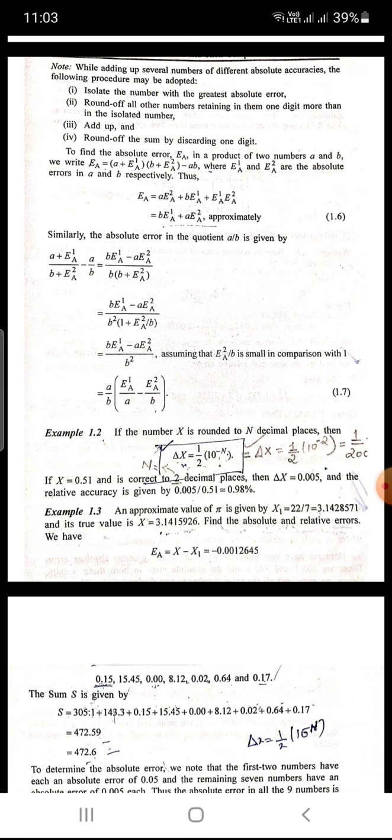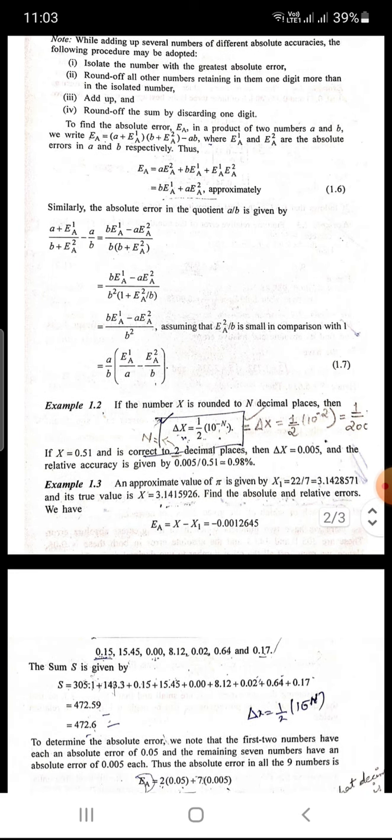Which equals b e1a minus a e2a upon b plus e2a, which equals b e1a minus a e2a upon b squared times (1 plus e2a upon b). So this will be equal to (b e1a minus a e2a) upon b squared times (1 plus e2a upon b).